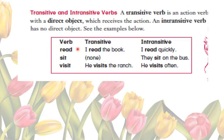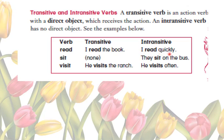A transitive verb is an action verb with a direct object that receives the action; an intransitive verb has no direct object. Take the verb 'read.' As a transitive verb: 'I read the book' — read what? The book. 'The book' is the direct object, so 'read' is transitive. As an intransitive verb: 'I read quickly' — what is being read? We don't know, so there is no object, and 'read' is intransitive.